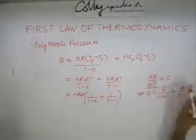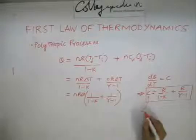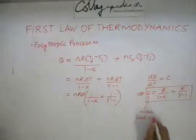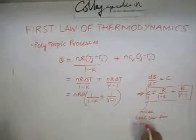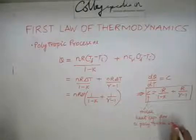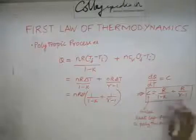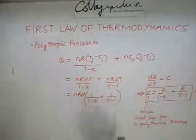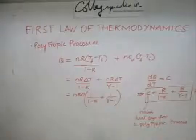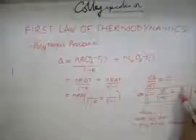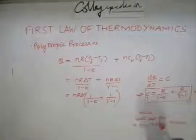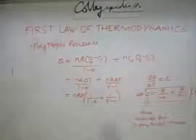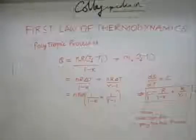This is the general expression for the molar heat capacity for a polytropic process. Note that in this expression k cannot be equal to 1, so this expression is invalid for an isothermal process. For an isothermal process, delta u equals zero, so q equals w, and the molar heat capacity depends on w. Therefore this expression is valid only for values of k where k is not equal to 1.